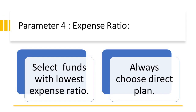The next parameter is expense ratio. Expense ratio is charged a few times. You can see the expense ratio details here.